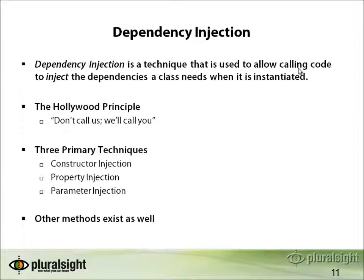Dependency Injection is a technique that allows calling code to inject the dependencies a class needs when it is instantiated. This also goes by the term the Hollywood Principle — basically 'don't call us, we'll call you.' So instead of our class calling SmtpClient, it could say it needs some kind of notification service that knows how to do notification, and go ahead and call that without instantiating it itself. The term DI has three primary techniques: constructor injection, property injection (setter injection), and parameter injection.